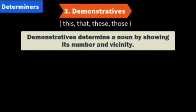Number three, we have demonstratives. Which are the demonstratives? This, that, these, those. Demonstratives determine a noun by showing its number and vicinity — its closeness or nearness, and how many. 'This guy is super talented' — 'this guy' means they are standing near to him.